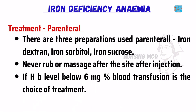For parenteral treatment, there are three preparations used: iron dextran, iron sorbitol, and iron sucrose. Never rub or massage the site after injection. If hemoglobin level is below 6 mg percentage, blood transfusion is the choice of treatment.